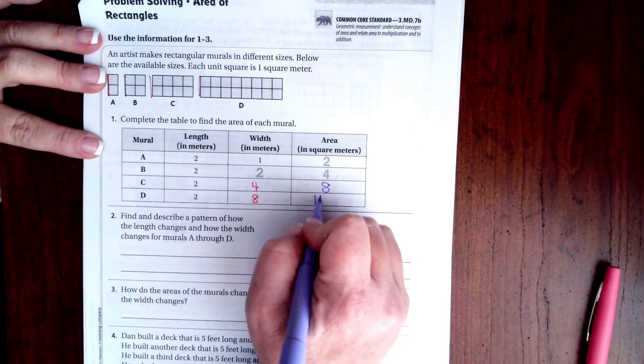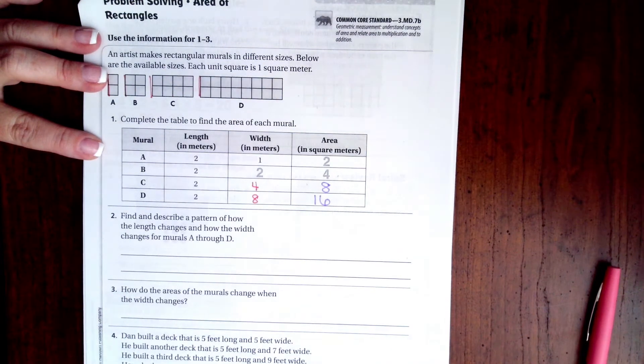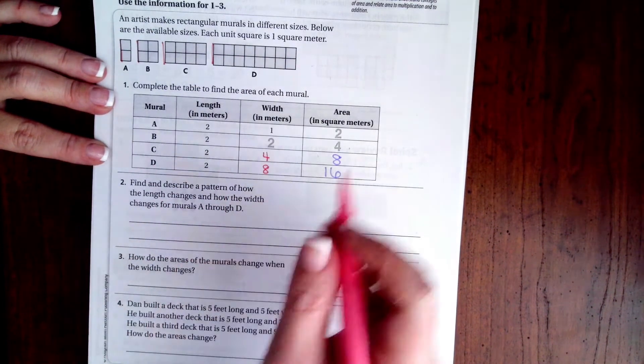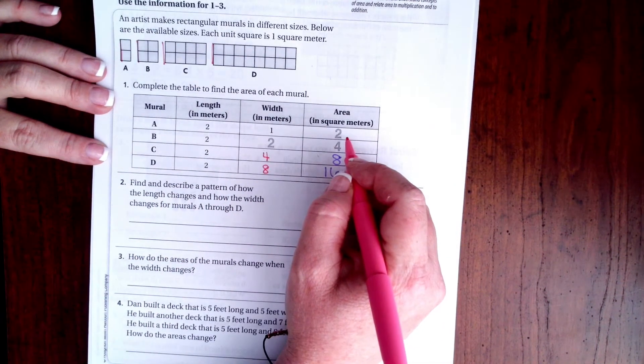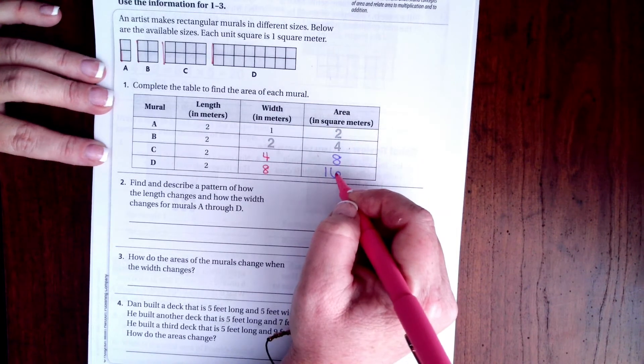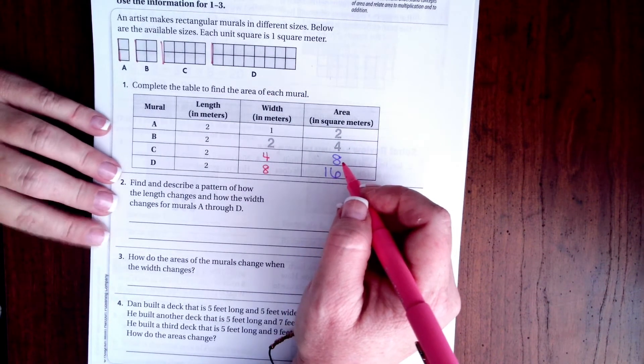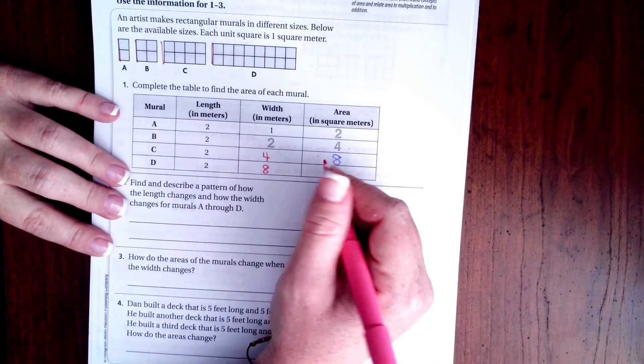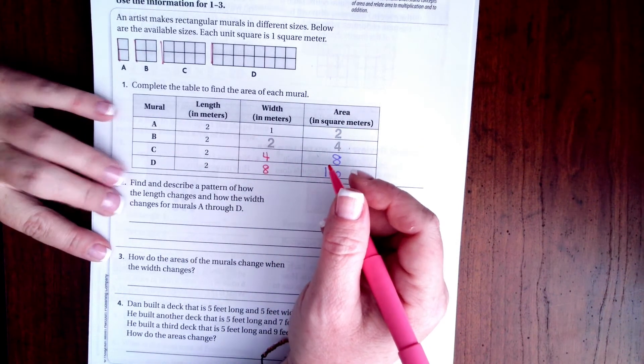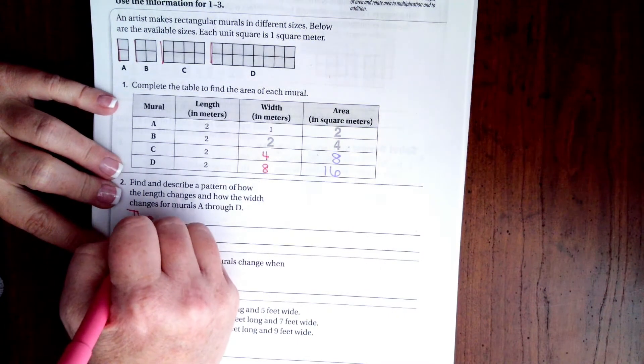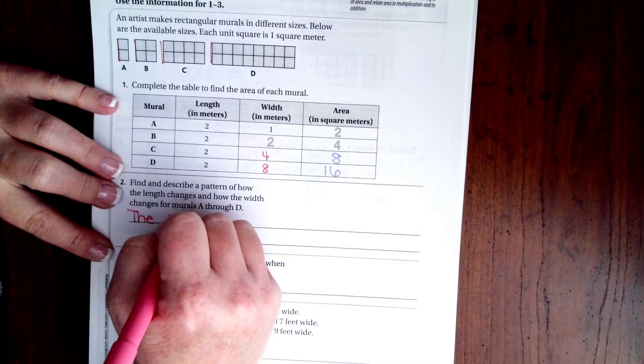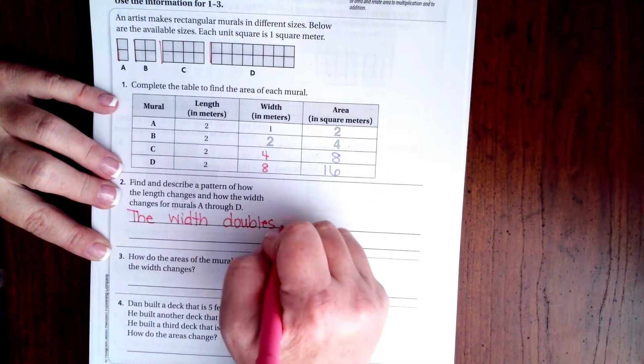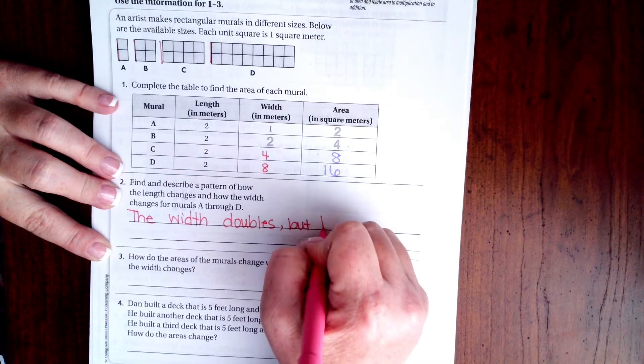Find and describe the pattern of how the length changes. The length changes every time it doubles. So the length doubles each time, or sorry, the width doubles. This is the width, not the length. So the width doubles, but the length stays the same.